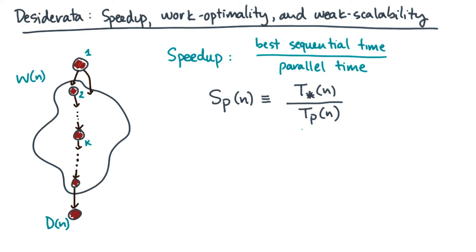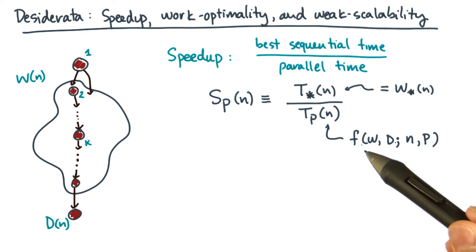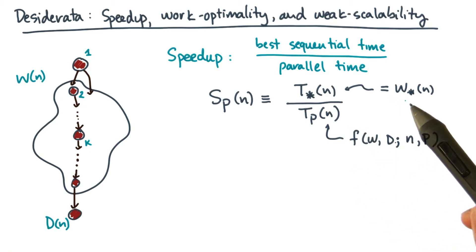Now, a quick comment about the numerator and denominator of speedup. The denominator will, in general, depend on the work, the span, the problem size, and the number of processors. The numerator will depend essentially on the work done by the best sequential algorithm. So for notational consistency, since I'm using work in the case of the parallel algorithm, I'll use another work symbol for the sequential algorithm. The best sequential time will essentially always be equal to the best sequential work.